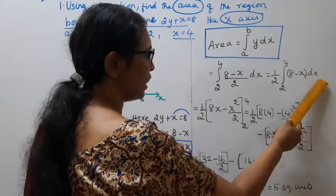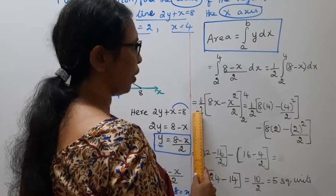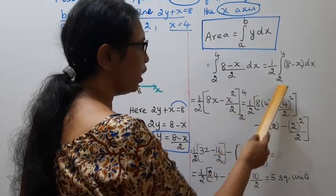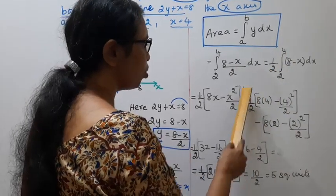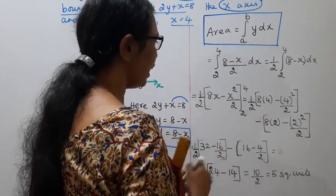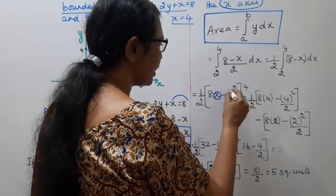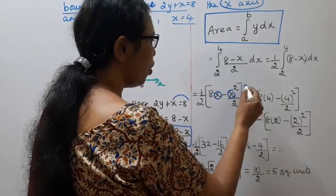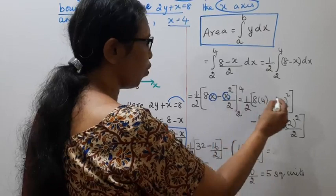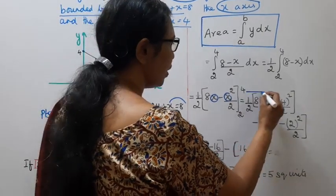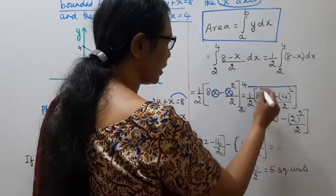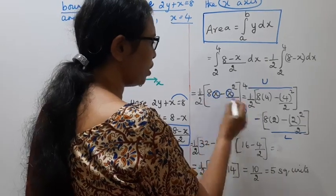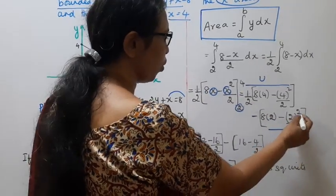Area equal to 1 by 2 integral from 2 to 4 of (8 minus x) dx. Integrating: 8 integrates to 8x, minus x integrates to x square by 2. Applying limits from lower limit 2 to upper limit 4.